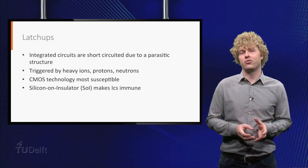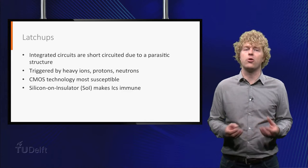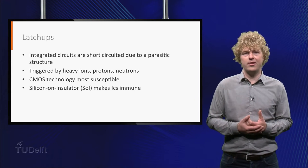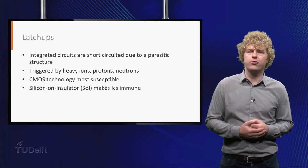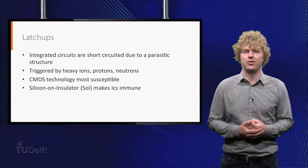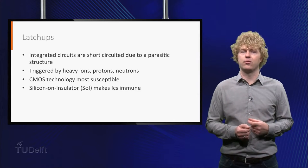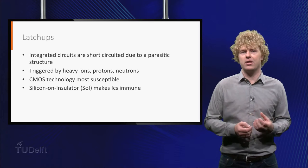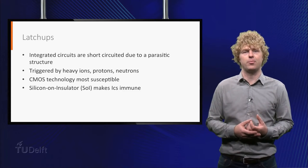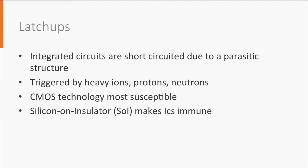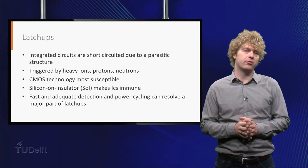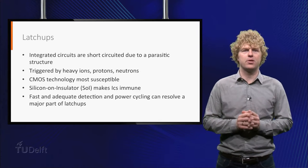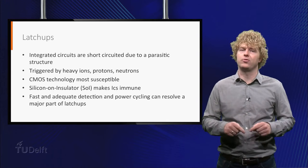Silicon on insulator is even somewhat faster and more efficient than CMOS on bulk silicon substrates, which is the current mainstream. The manufacturing cost for silicon on insulator increases with about 10%, which for space-grade components is peanuts. But for bulk commercial electronics, this is still a barrier which prevents major availability. The good news, however, is that this technique allows for further miniaturization and speed improvements, and we can expect more commercial electronics to make the step towards silicon on insulator. But is there also a way to simply deal with a latch-up? Well, if you implement fast and adequate detection and power cycling, a major part of the latch-ups can still be resolved in time. After this power cycle, the parasitic structure is gone. This mechanism can be designed around the integrated circuit, but can also be part of the integrated circuit.